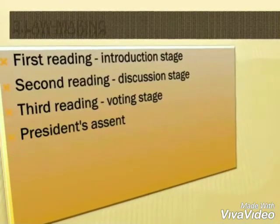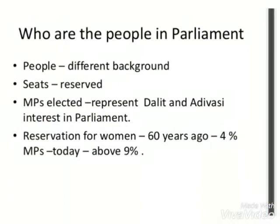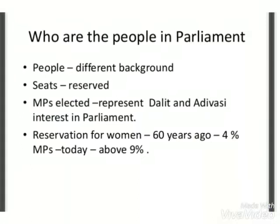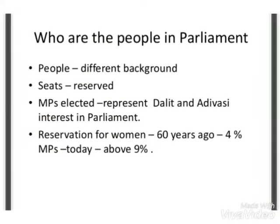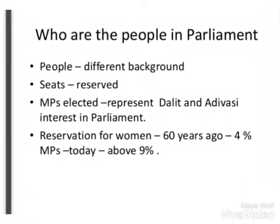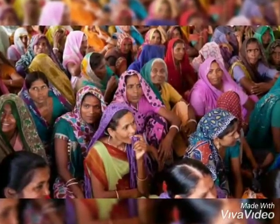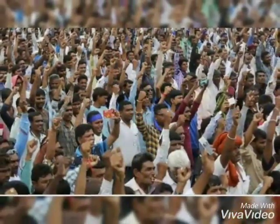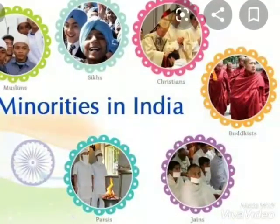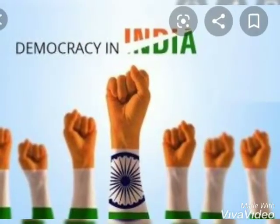The next and the last topic is: who are the people in the parliament? Children, now we have more and more participation of people from different backgrounds like women, Adivasis, Dalits, and minorities. This happened due to seat reservation. Our country can be called a truly democratic country only when there is maximum participation of people from different backgrounds.